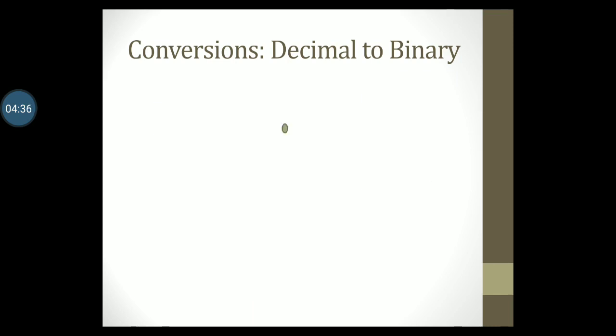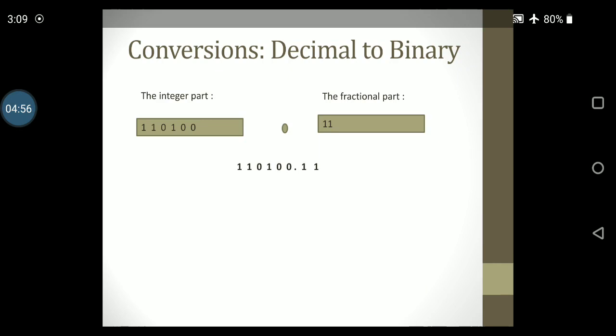In conclusion, we have recorded the integer part of the decimal number or its equivalent as 110100 and the fractional part as 11. Putting these two together along with the decimal point, we get the number 110100.11.